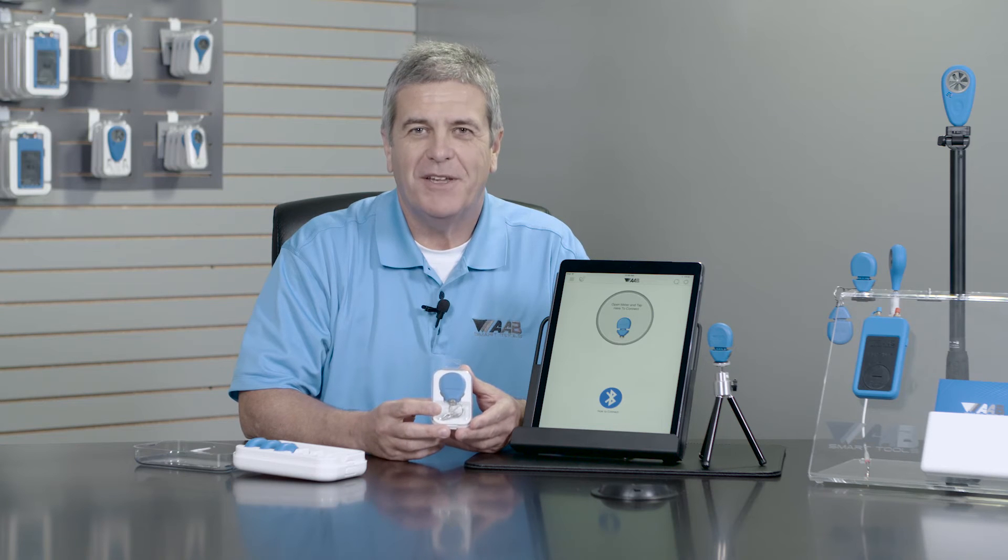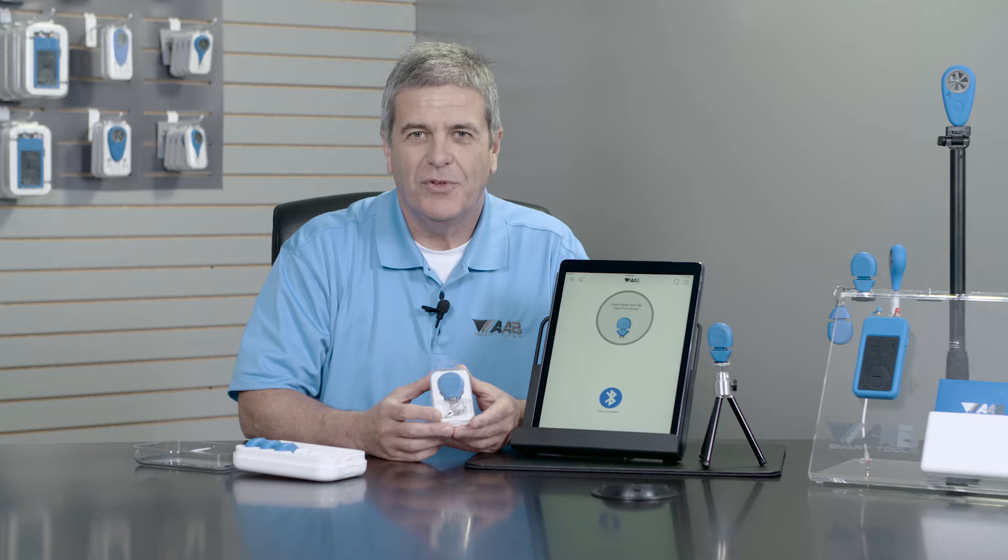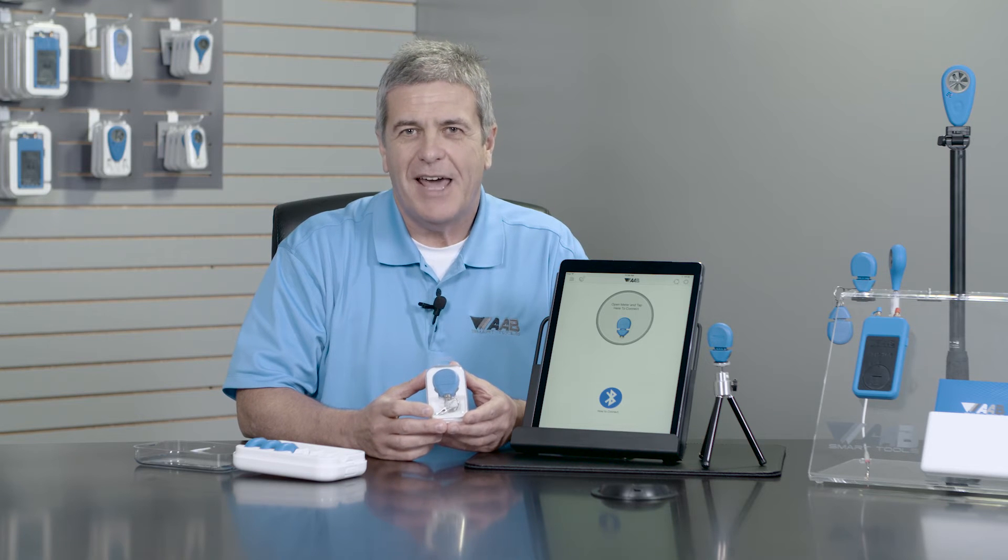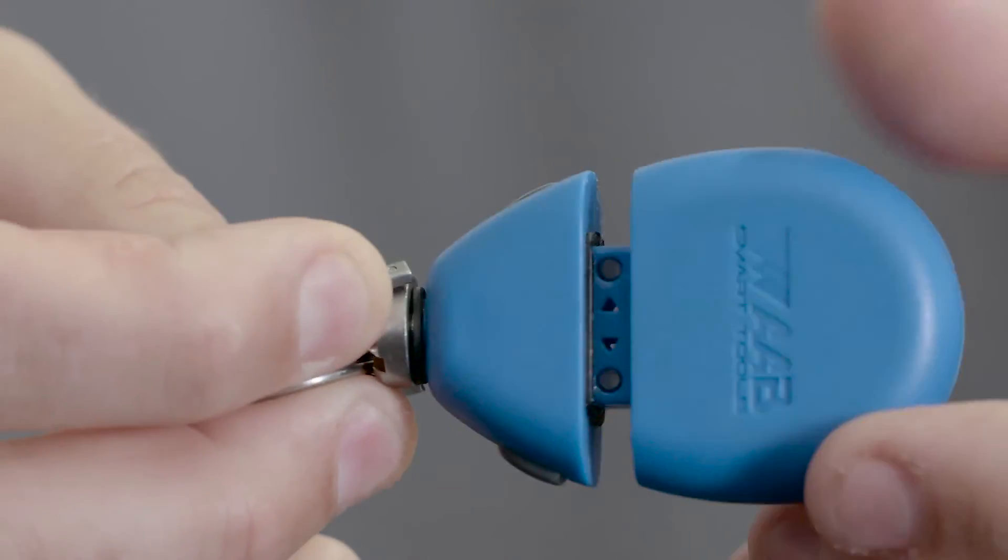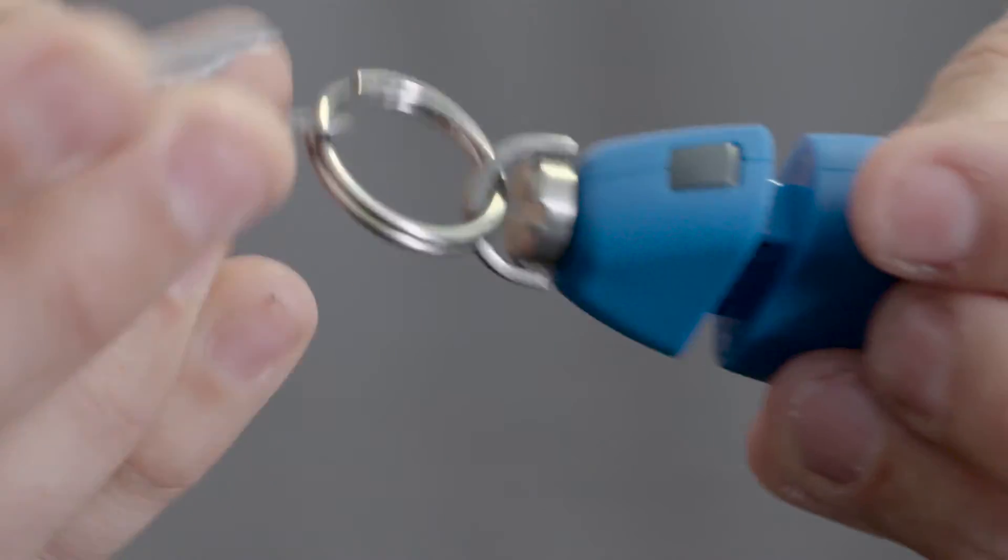Today we're going to be talking about the TempSmart 100, the newest tool from AAB Smart Tools. An efficient data logging, relative humidity, temperature reading device that can be your eyes and ears in a building when you're not there.